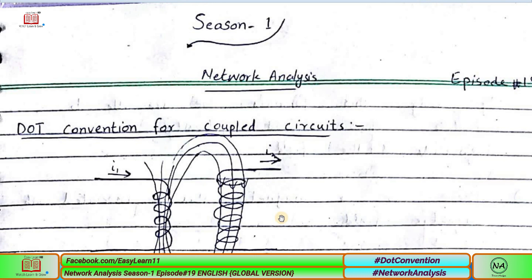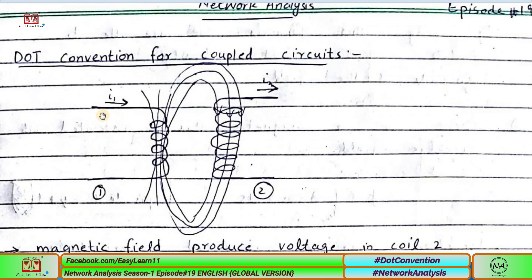Today we are taking another step toward networking. In today's lecture we are going to discuss dot convention. Dot convention always occurs in transformers — this is the most widely used example whenever we discuss dot convention. A transformer is a perfect example, so let's start today's lecture.